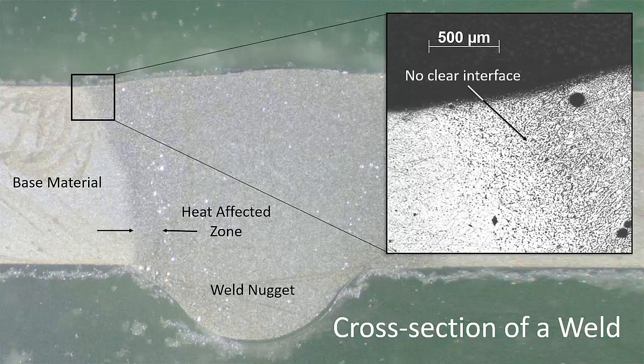The materials effectively fuse together to form one material with local regions where the material properties, such as strength, may be affected due to the welding process. The fusing of material in a weld creates a form of integral structure. The distinct separation of parts is eliminated, which can have many benefits for the structural performance of the part.